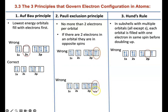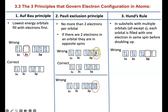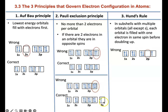This next one is also wrong because you have three electrons and two of them are in the same spin — they are going to repel each other. To correct the first: flip one electron upside down so the spins are opposite. For the second, you have to move the extra electron into the next energy level, which is 3s.